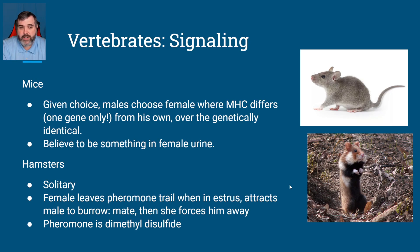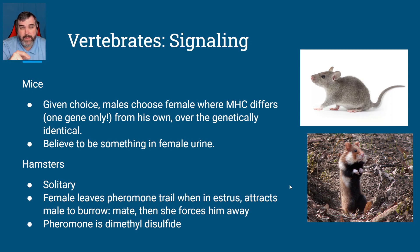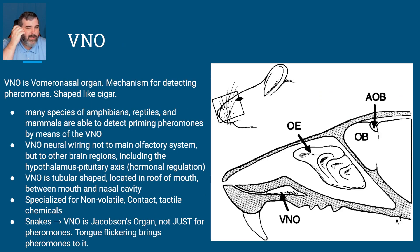Hamsters are very solitary creatures. Females leave pheromones when they're in estrus, which attracts males from a good distance. They mate and she forces the male away. The pheromone here — and this is the chemistry teacher in me — is dimethyl disulfide: CH₃S₂CH₃. It's methyl groups on the ends and sulfurs in the middle, kind of like a sulfur chain instead of a carbon chain.